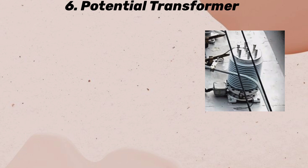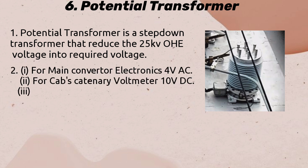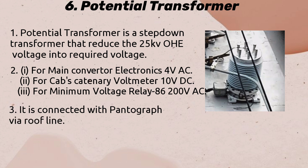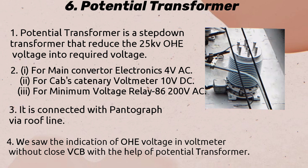Potential Transformer: The potential transformer is a step-down transformer that reduces the 25 kV OHE voltage into required voltage — for the main converter electronics: volts AC; for cab catenary voltmeter: 10 volts DC; for minimum voltage relay: 86 to 100 volts AC. It is connected with the pantograph via roof line. We can see the indication of OHE voltage in the voltmeter without closing the VCB, with the help of the potential transformer.